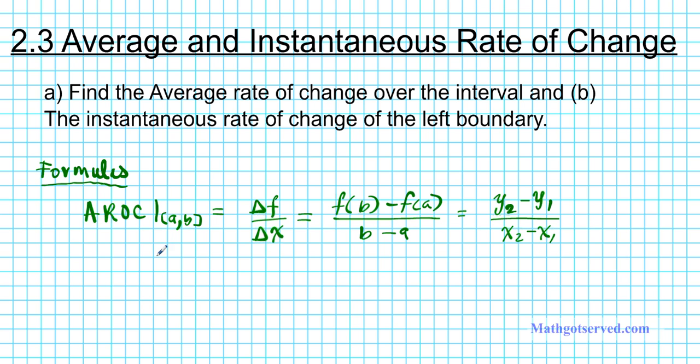Now let's take a look at the instantaneous rate of change formula. I'm going to call this IROC. Instantaneous rate of change is at a specific point, a specific x value. Average rate of change is at an interval, you need two x values. Instantaneous, you need just one value, namely x equals a.